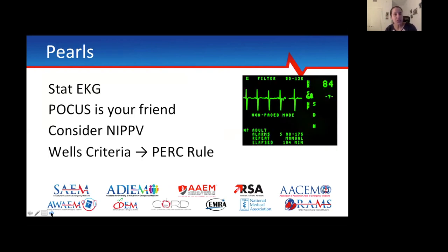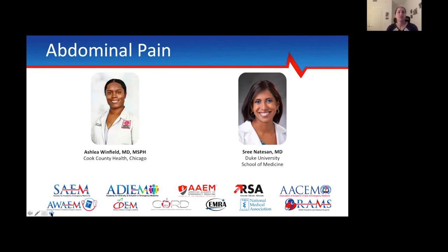Pearls for this case: always get that STAT EKG. Patients do much better once they get to intervention like PCI — the metric is within 90 minutes. Point-of-care ultrasound is your friend. Consider non-invasive positive pressure. When evaluating a patient for pulmonary embolus workup or imaging, always use the Wells criteria before the PERC rule. And remember: vitals are vital.